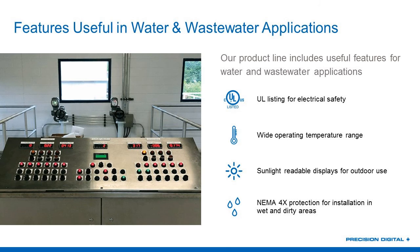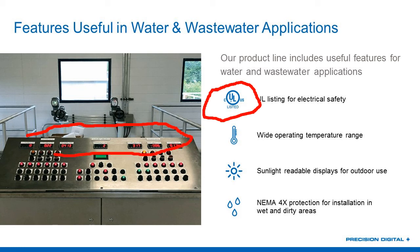Some of the features you'll find useful in water and wastewater applications with our meters: first of all, we do have UL listings for electrical safety — UL and CUL for Canada. Wide operating temperature range: we go negative 40 to positive 70°C, or 160°F. Sunlight-readable displays — we have very bright displays. You see some of them on this sand filter console right here. We have bright displays that can be seen from 30 feet away, and our Helios that you can see from 100 feet away — very bright, sunlight-readable displays, definitely for outdoor use.